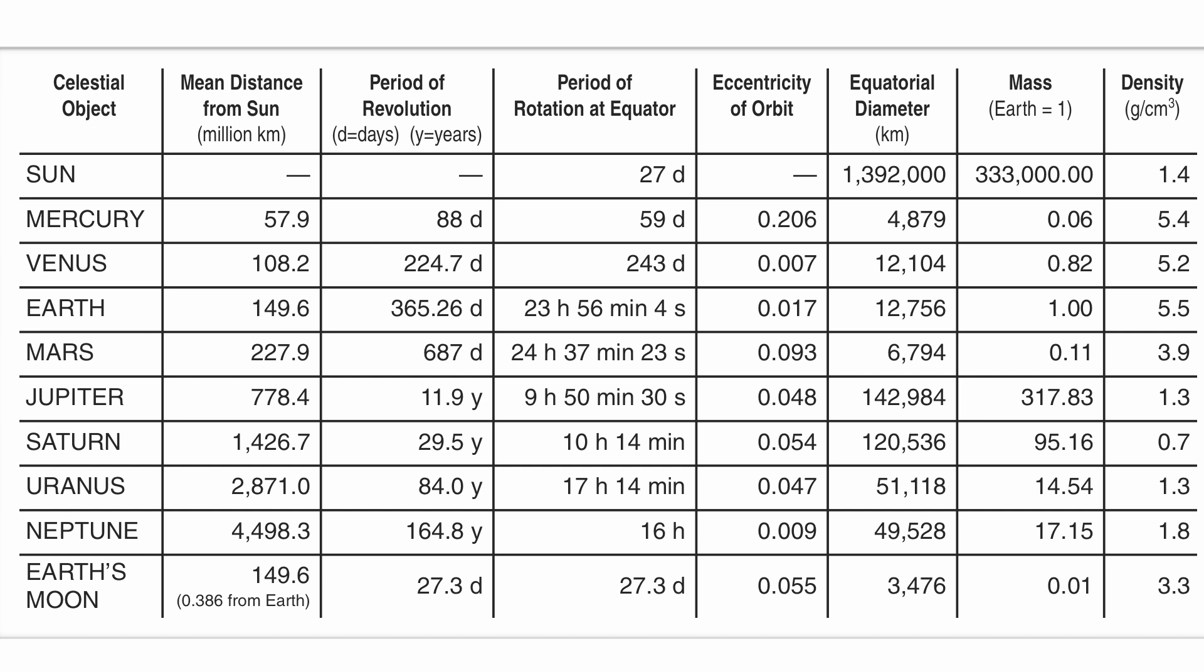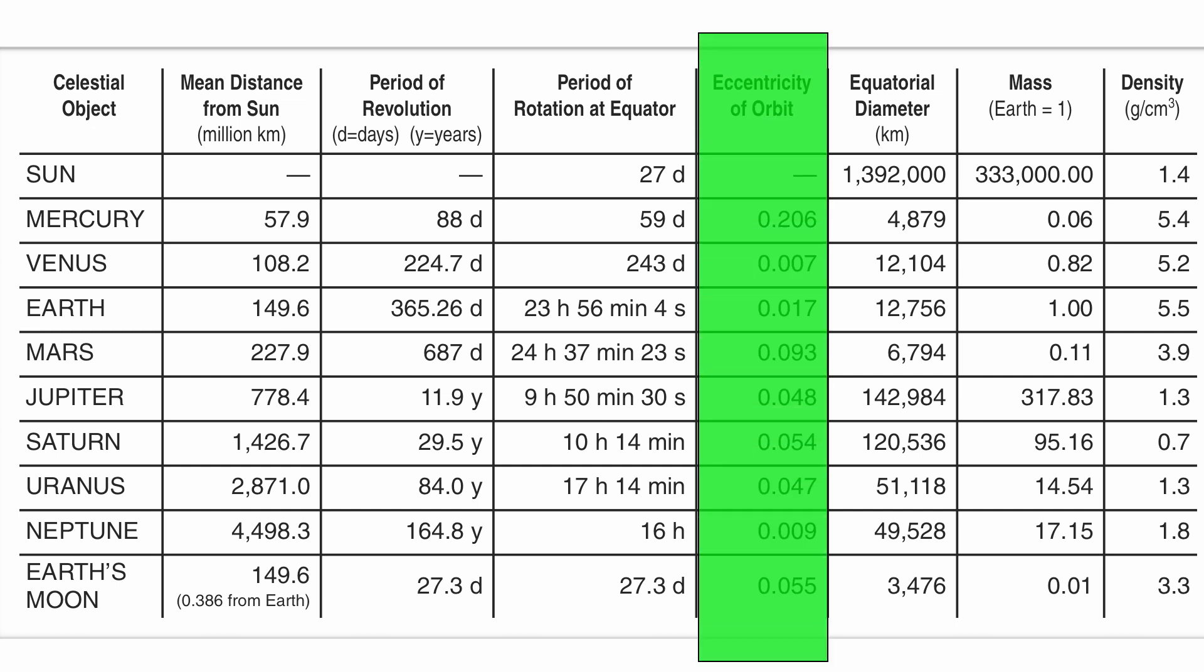Now eccentricity can be found in your solar system data chart on page 15. You'll notice that the biggest value given to you there is going to be Mercury. It has the flattest orbit when you compare them to the other planets at 0.206. You take a look at Venus, that's going to be the roundest orbit because it's closest to zero.